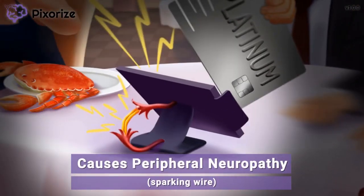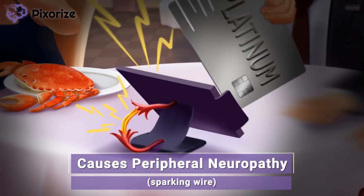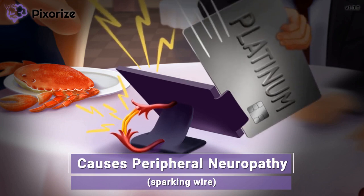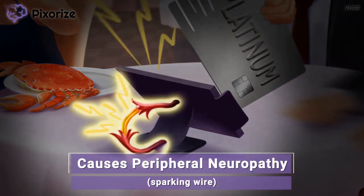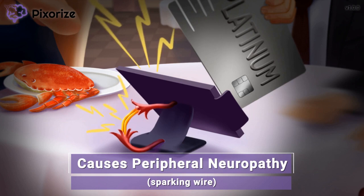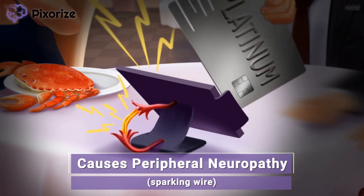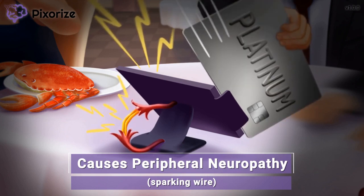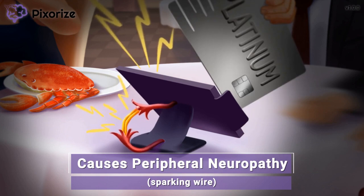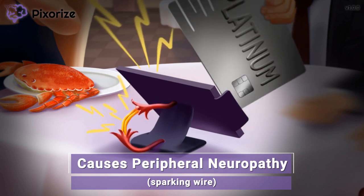There's a frayed, sparking wire causing the malfunctioning card reader. We use a frayed, sparking wire as our symbol for neuropathy, because nerves are kind of like wires — frayed wires can remind you of damaged nerves. Cisplatin can cause peripheral neuropathy, which often manifests as tingling in the extremities. Just remember this frayed wire to remember peripheral neuropathy.